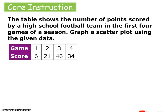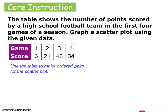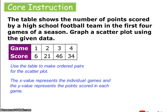This table shows the number of points scored by a high school football team in the first four games of the season. We'll graph a scatter plot using the given data. We're going to use the table to make ordered pairs, letting x represent the individual games and y represent the points scored in each game.